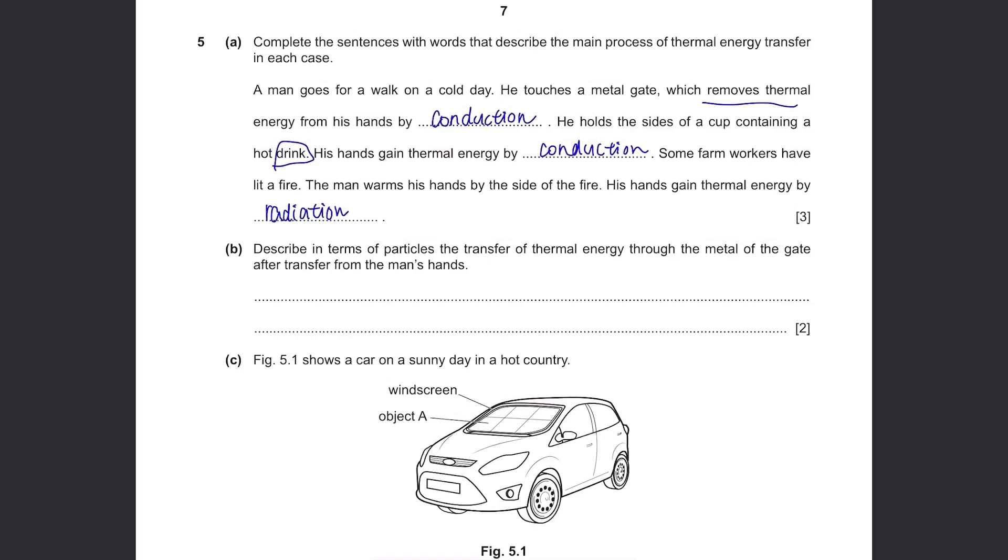Part B. Describe in terms of particles the transfer of thermal energy through the metal of the gate after transfer from the man's hands. So how is thermal energy transferred within the metal? Metals have delocalized electrons and these electrons can move around, which transfer heat in the process. So that's why the thermal energy can be transferred through the metal.